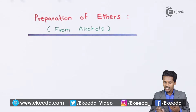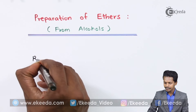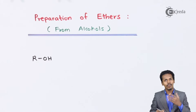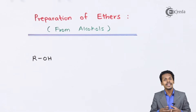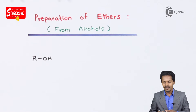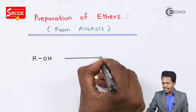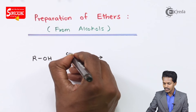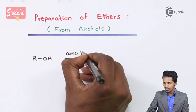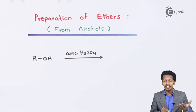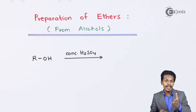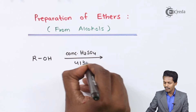Considering alcohol with the general formula ROH, this alcohol should be treated with concentrated H₂SO₄. The temperature required for the reaction so that dehydration occurs and we get an ether is 413 Kelvin.